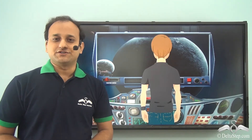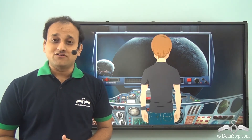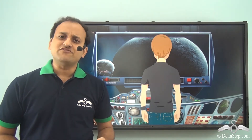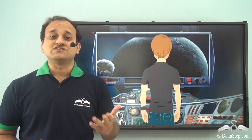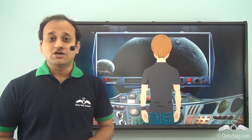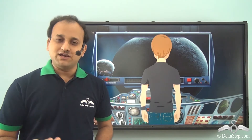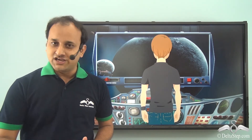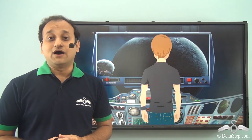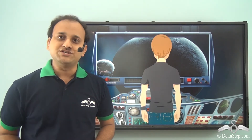Sam got a job at the space station and encountered a lot of complex problems which he had to solve in very little time. One such problem came from the Mars mission data: one of the space flights had a speed of log 8 to the base 32, and to increase its speed they needed to add an additional engine whose speed would be log 4 to the base 32. Sam needed to calculate the final speed of the spacecraft after adding the new engine.